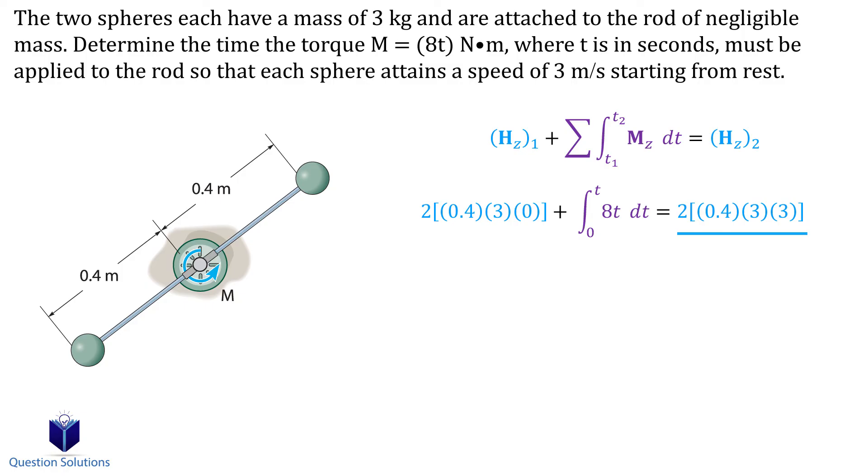Which is pretty much the same as the initial momenta, but now the spheres are spinning with a velocity of 3 meters per second. All we need to do is solve for the time, and we get 1.34 seconds. So it took the spheres 1.34 seconds to achieve a speed of 3 meters per second.